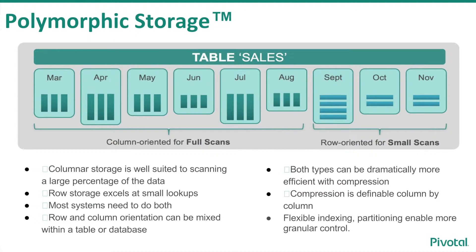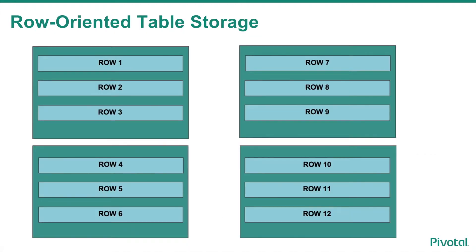There are advantages to each. In a row-oriented table, all of the columns that make up a row are stored together in one single file. If the row is small enough, it would actually fit on a single data page in the single file.